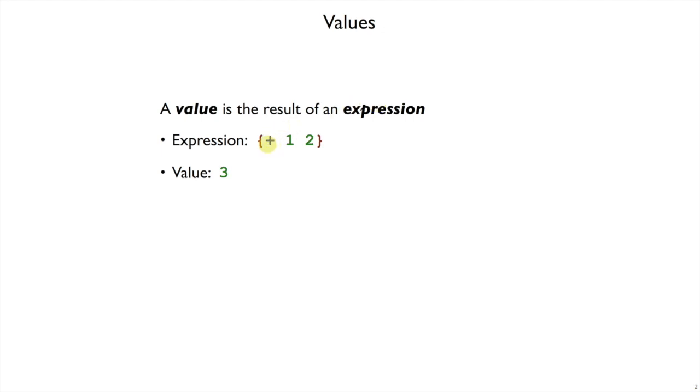Here's an example of an expression, a curly expression, plus one, two. That's something we can pass to interp, and we'll get back the result three. Three is a value, it's a result, that we represent using just a number three. The expression has numbers inside of it, but this one right here has to be wrapped with numE to turn it into a number expression. So expressions go in, values come out.